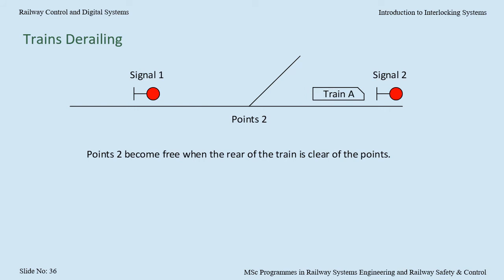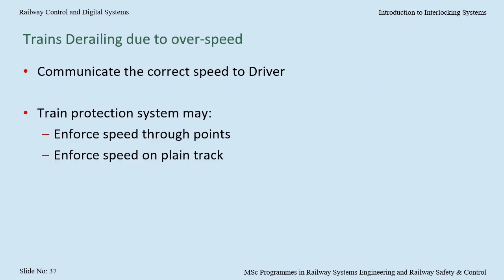Once train A is clear of the points, they can become free for another movement. Additionally, the speed appropriate to that route needs to be communicated to the driver so the driver can regulate the speed of the train accordingly. Train protection systems may be provided to ensure that the train driver does not go through the diverging leg of the points too quickly and derail. Train protection systems may also be provided to ensure that the driver does not overspeed and derail on plain track.